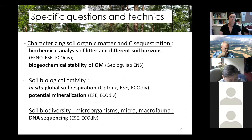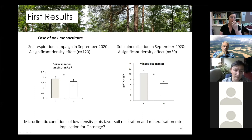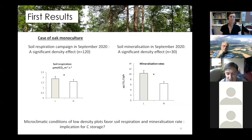We conducted our first sampling campaign in September 2020 and the second one two weeks ago. I can show you some previous results from our first sampling campaign, notably concerning soil respiration. In the oak monoculture under the low density plot — shown in the figure on the left — we observed a significant increase in soil respiration in the low density plot. Analyzing the potential mineralization rate of organic matter, we also observed an increased mineralization rate under low density plots. We consider that the microclimatic conditions of low density plots favor soil respiration and mineralization rate, which could have particular implications for carbon storage.